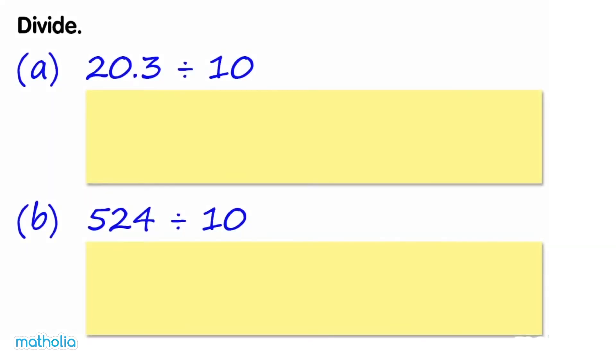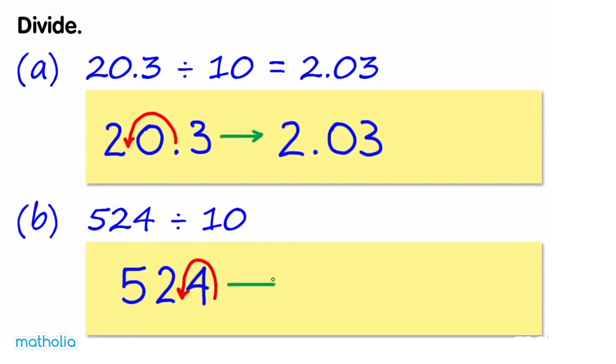Problem a: Divide 20.3 by 10. We can divide by 10 by shifting the decimal point one place to the left. 20.3 becomes 2.03, so 20.3 divided by 10 equals 2.03. Problem b: 524 divided by 10. Shifting the decimal point one place to the left